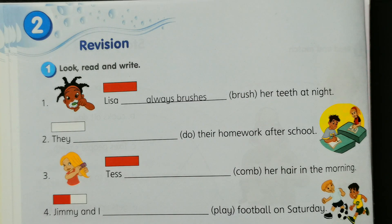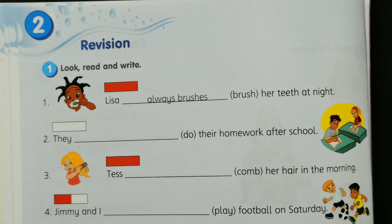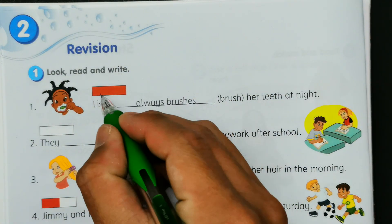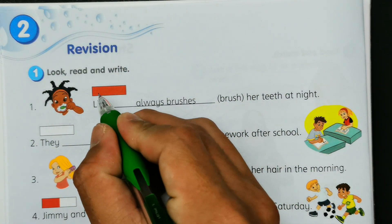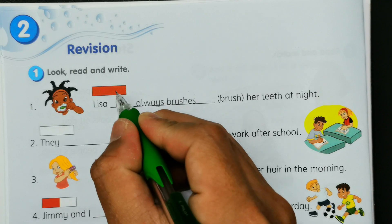Okay pupils, we are on the GetSmart Plus 3 workbook on page 16. We are on module 2. This is revision activity 1: look, read and write. In this activity you will need to learn adverbs of frequency.